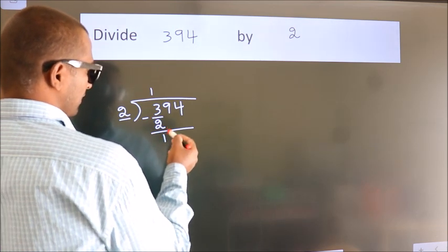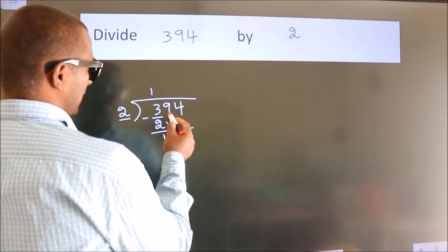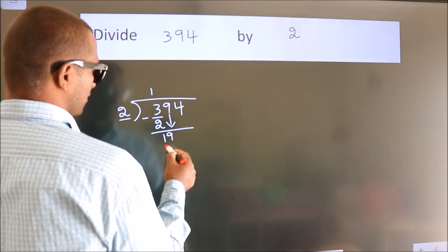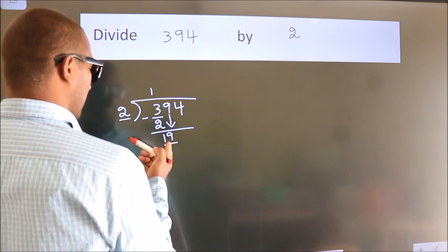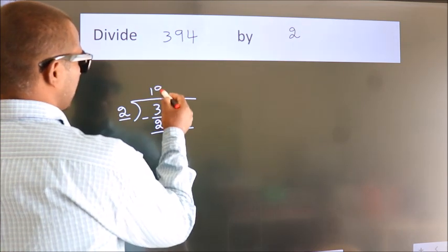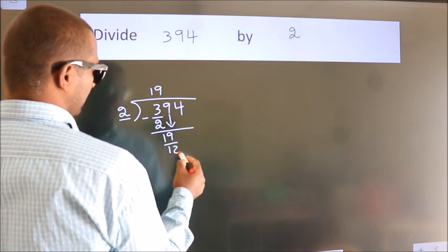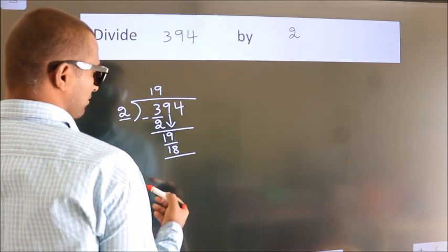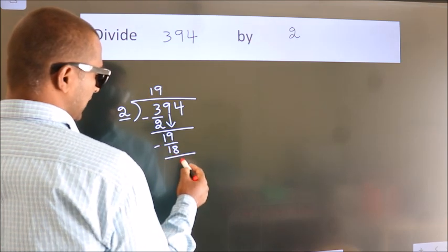After this, bring down the beside number. So 9 down, so 19. A number close to 19 in 2 table is 2 9s, 18. Now we subtract. We get 1.